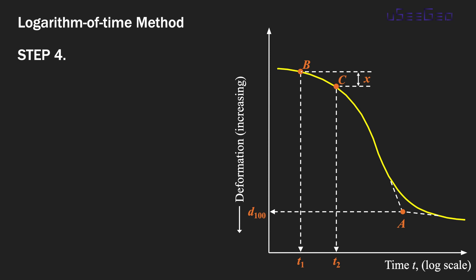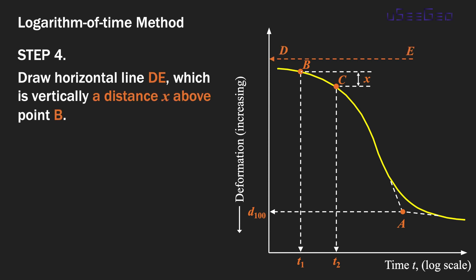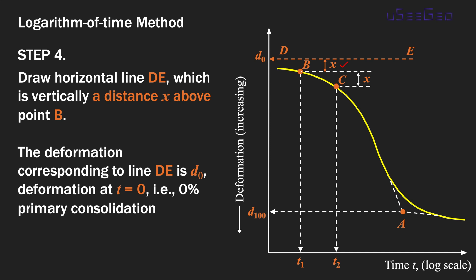Once you have the difference in deformation, small x, step number four is to draw a horizontal line called DE, which is vertically at the distance x above point B. This horizontal line DE is at this vertical distance x above point B. The deformation corresponding to line DE is defined as d0 (d naught), which is the deformation at time t equals zero, or the deformation at zero percent primary consolidation. Since we're plotting in log t scale, there is no t equals zero, so we must define this d0. That is step number four.